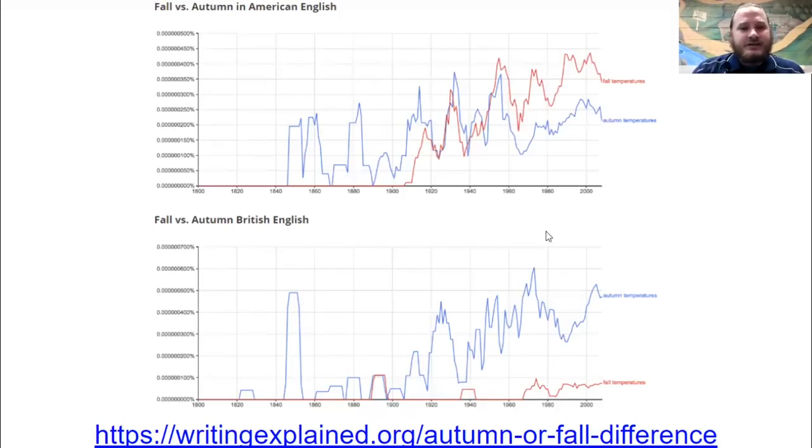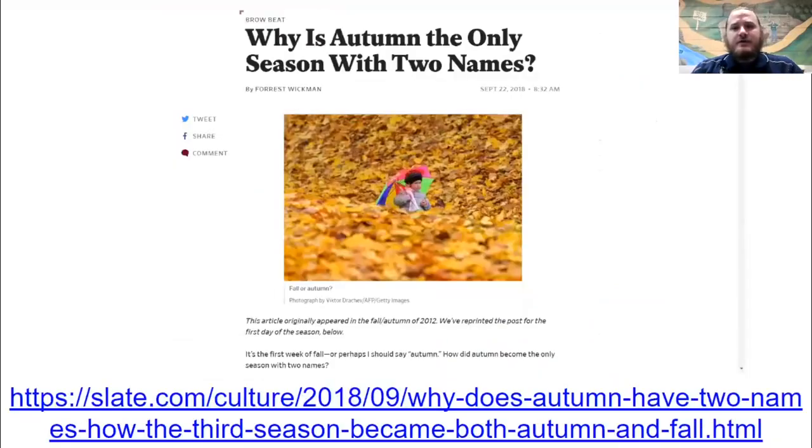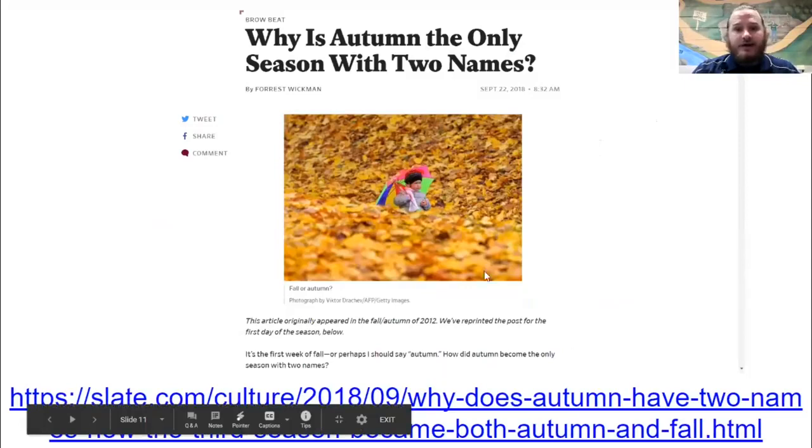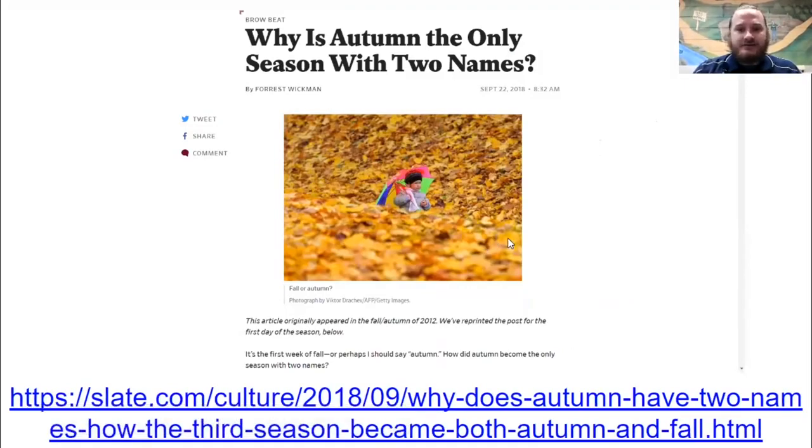And if you take a look at these charts, you can see that in American English, fall is a more common term than autumn, but they are both fairly common. And then in British English, fall is considerably less common. Now, there's a fascinating history behind this, but I want to move on to the actual game. That said, if you're interested in learning more about that history, go ahead and check out this link, which does a good job of explaining it.